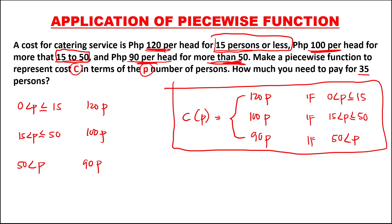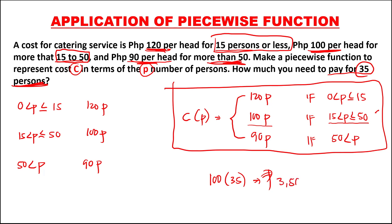To find the cost for 35 persons: since 35 belongs to the condition greater than 15 but less than or equal to 50, we use that equation. That's 100 times 35. Therefore, the cost for 35 persons is 3,500 pesos.